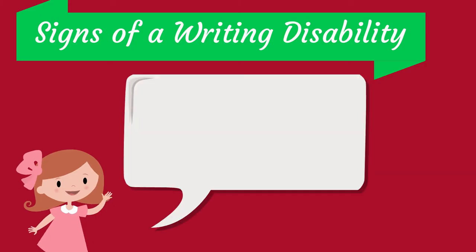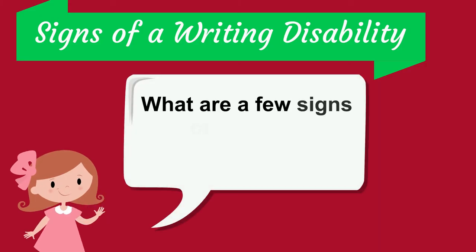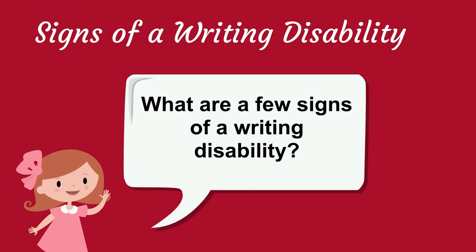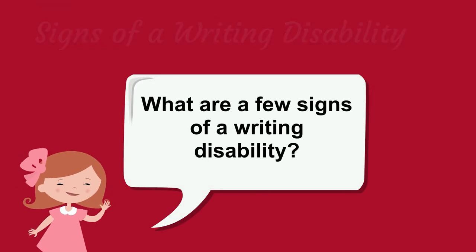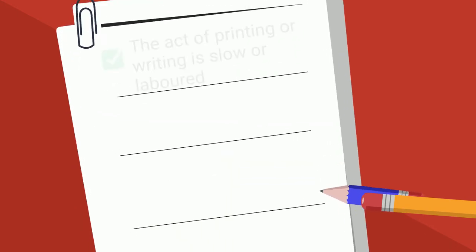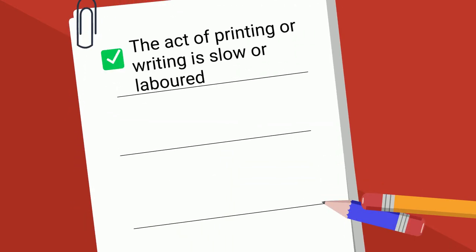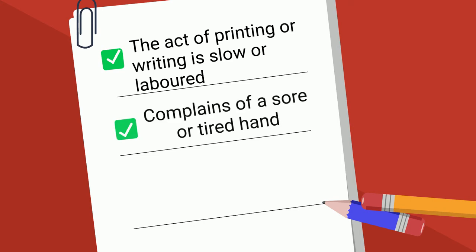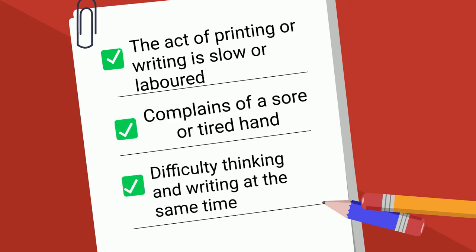What are a few signs of a writing disability? Some signs include the act of printing or writing being slow or labored, complaints of a sore or tired hand, and difficulty thinking and writing at the same time.